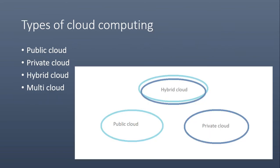Now let's see the types of cloud computing. The first one is a public cloud. It is given by a third party provider. It is available to anyone over the internet. It is scalable and convenient.